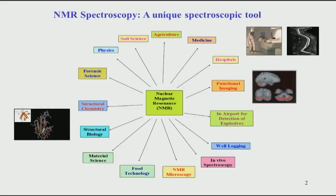I will start from the very basic applications of NMR spectroscopy. NMR spectroscopy is a very unique spectroscopic tool with applications in a wide area of science and technology. For example, it is applicable in agriculture, in medicines — a very popular application called magnetic resonance imaging, MRI. NMR spectroscopy is also used in different areas like NMR microscopy and food technology.